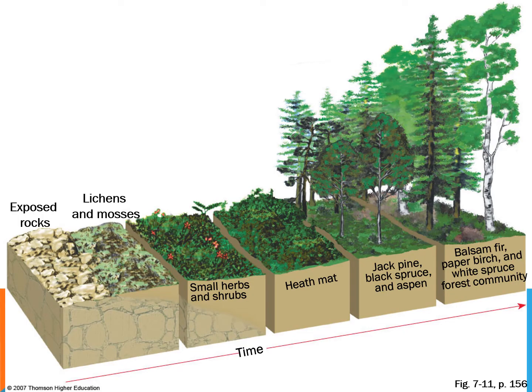A rocky, lifeless beginning — that's primary succession. This could take 100 years or a very long time. If a pine tree seed gets blown by wind or dropped by a bird and lands on the rocks, it can't germinate — there's not enough moisture, not enough nutrients in the soil. But if spores of lichens and moss, those little flat low-growing things that can grow right on rocks, land on the rocks...